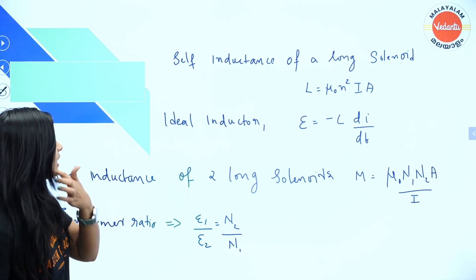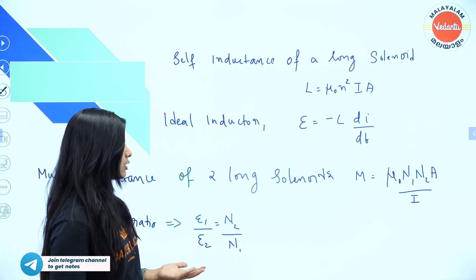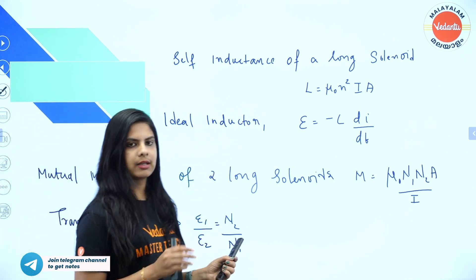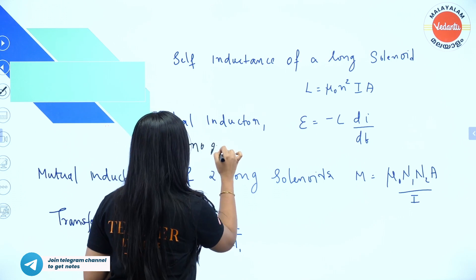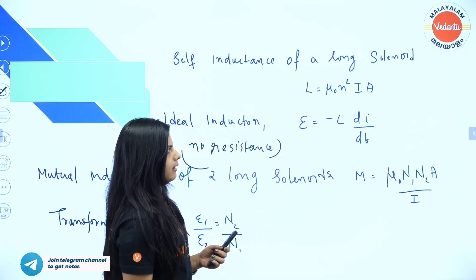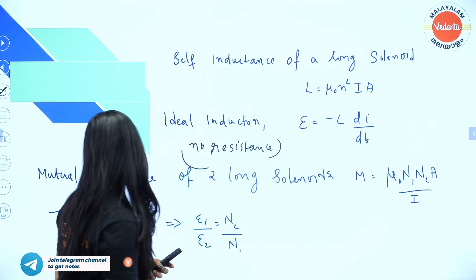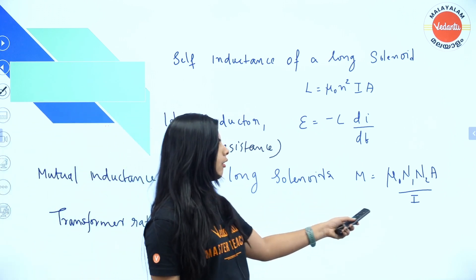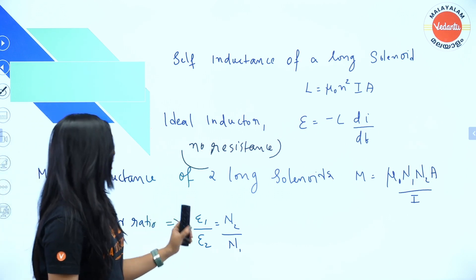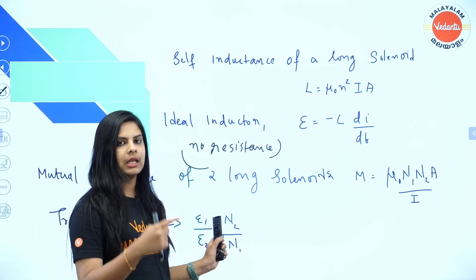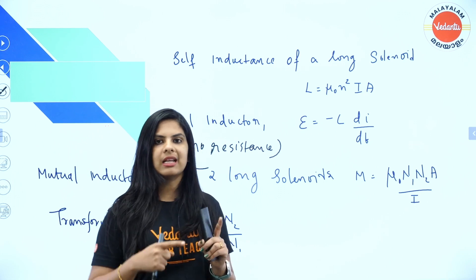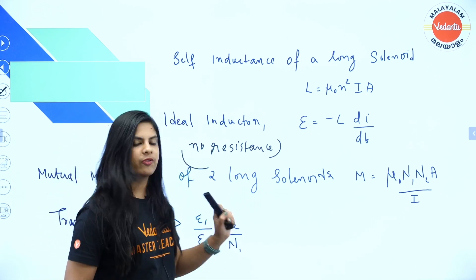Important formulas: Self-inductance of a long solenoid is L equals mu₀ N² times A. EMF equals minus L di/dt. For mutual inductance of two long solenoids, refer to the equation. Transformer ratio: EMF of primary divided by EMF of secondary equals N₂ by N₁ — that is the number of turns in the secondary divided by the number of turns in the primary.